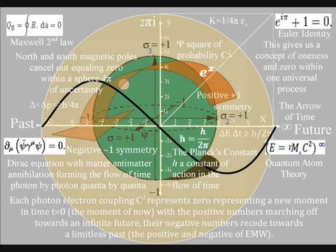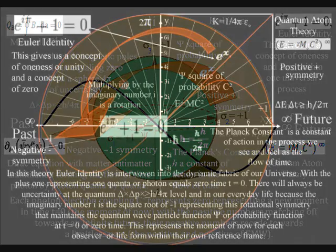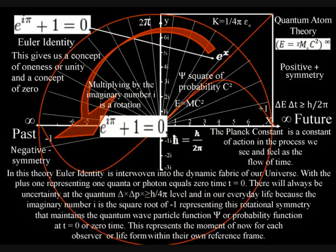But in this theory, Euler's identity is interwoven into the dynamic fabric of our universe, with the plus one representing one quanta, or photon, equals zero time, t equals zero, the moment of now.